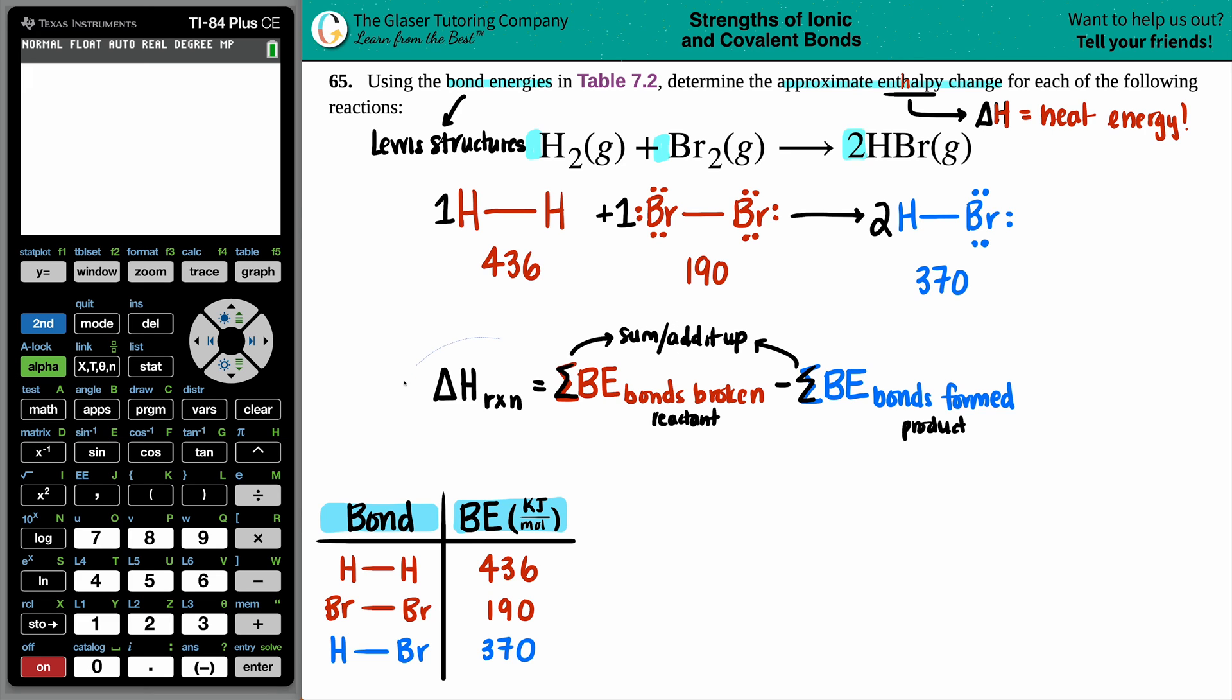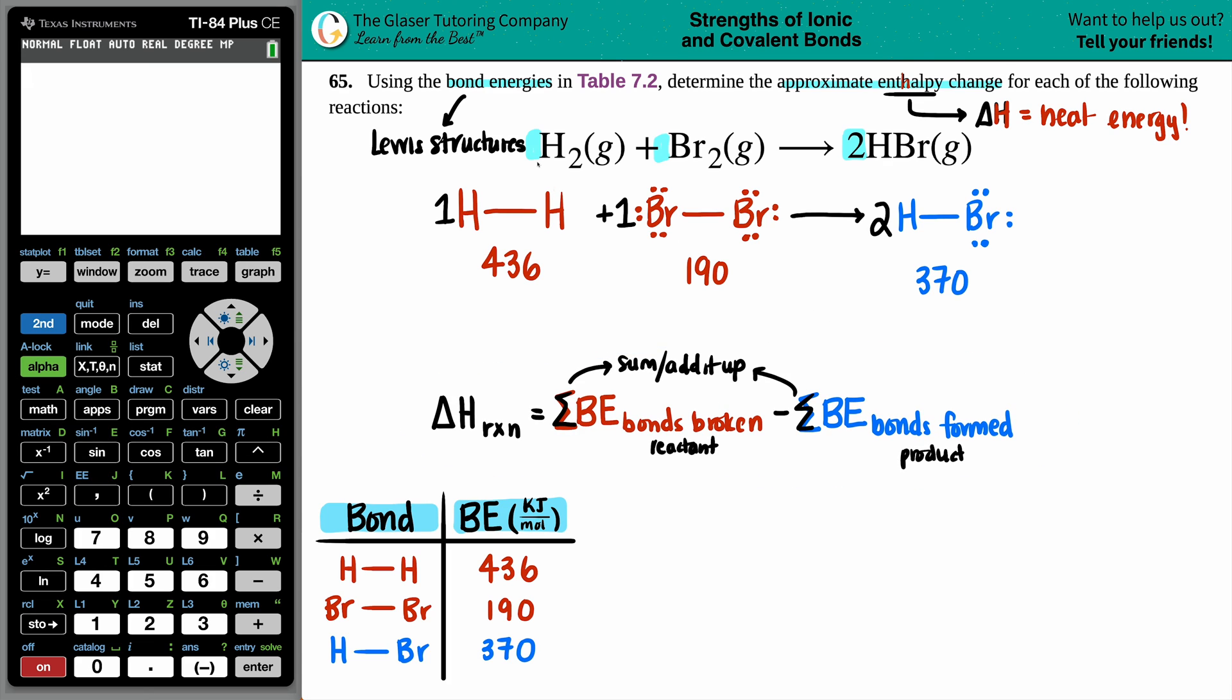All right. So let's add it all up. And now the thing is, is that we just have to take into consideration how many of each we have, but we have one H2 and one Br2. So technically these should be multiplied by one. I'm just showing you that for future reference. But any coefficient, you're just multiplying it by and literally it's H2 plus Br2. So you have to add these two together. That's why it's the sum for this side. There was two HBrs. So this is where it really matters. You have to times the 370 by two.